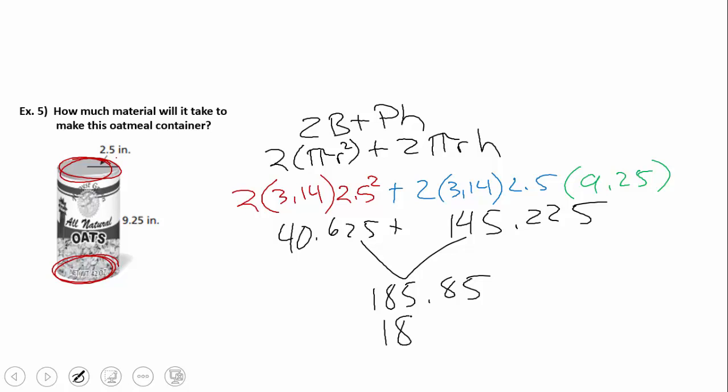And if I round it to the nearest tenth, I would get 185.9. And again we're talking inches, it's surface area, it's the minimum required, and that is squared to make that oatmeal container.